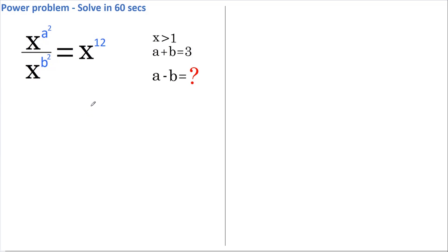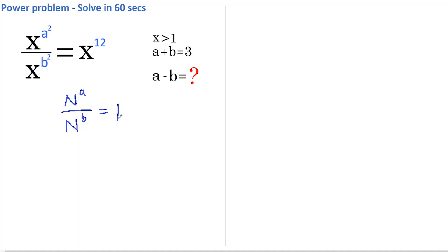Hi, welcome back. Today we're going to do this problem and we're going to find the value of a minus b. The first thing we need to know is this rule: if we have a number raised to a power and that's divided by the same number raised to a different power, then we can rewrite this as that same number raised to the difference between the powers.